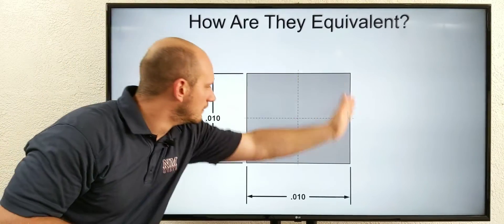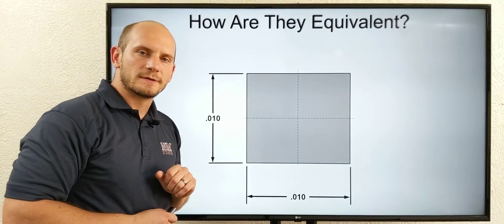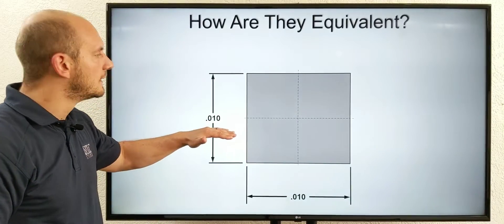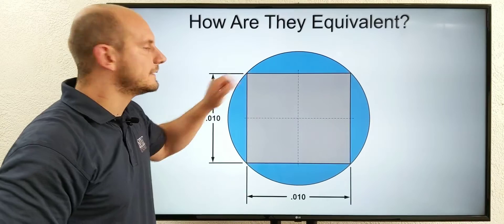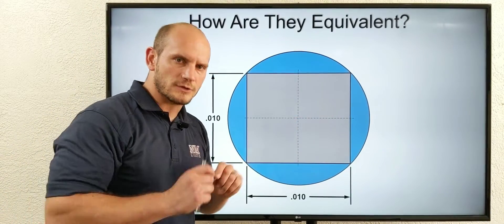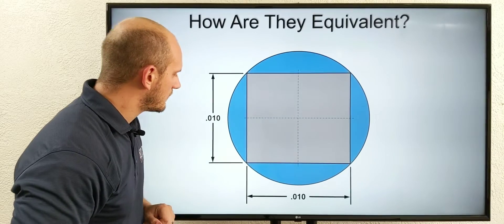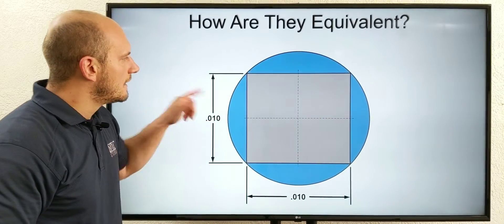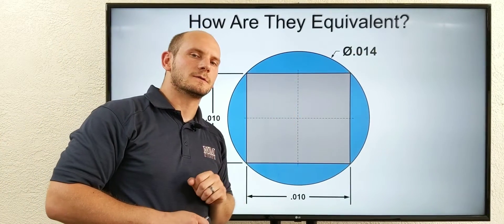We start with our traditional plus or minus five rectangular tolerance zone that we know is really ten by ten. Then we draw a circle around it - we make that circle tangential to those four corners. Well, if our traditional rectangular tolerance zone is ten by ten, that circle will end up being fourteen thousand.